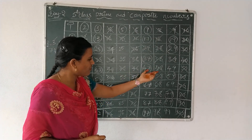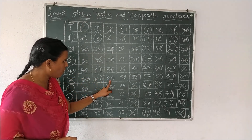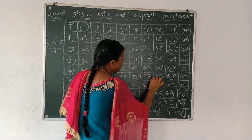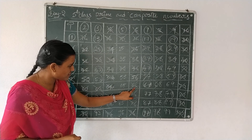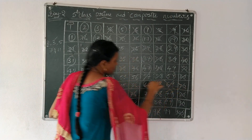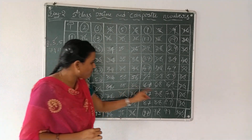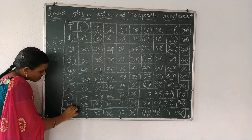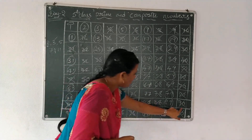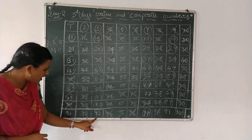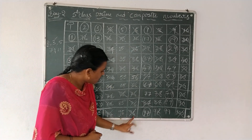Next, after 45: 48, 51, 54, 57, 60, 63, 66, 69, 72, 75, 78, 81, 84, 87, 90, 93, 96 — it's already crossed. Next, 99.